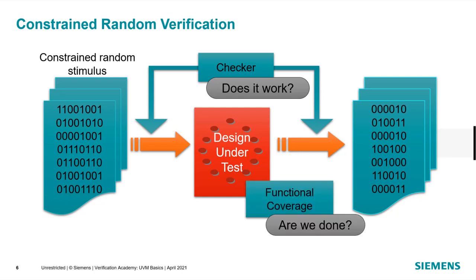The other question is: are we done? If we're creating random stimulus, we need some notion that we've actually covered all of the different aspects of the design that need to be covered. So we start with our verification plan and develop a functional coverage model — a set of checkers, cover points in SystemVerilog, assertions — and we track that to make sure all of the randomness we've created has reached all of the specific points in the design we want to cover, from protocol aspects on the bus to every transition in our state machine. That's functional coverage.